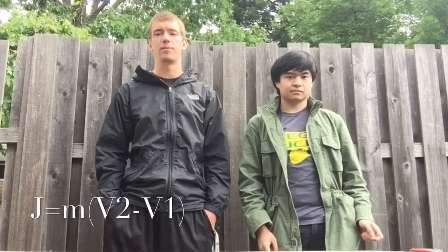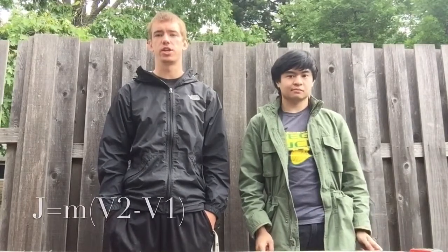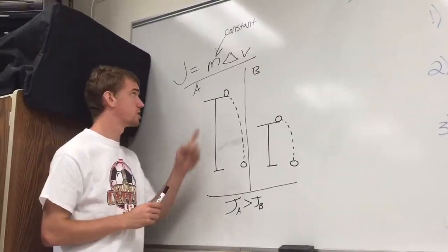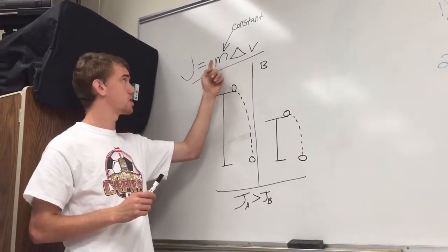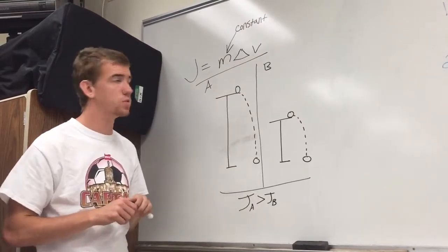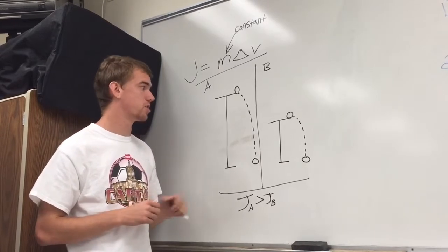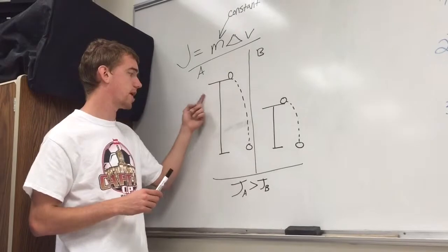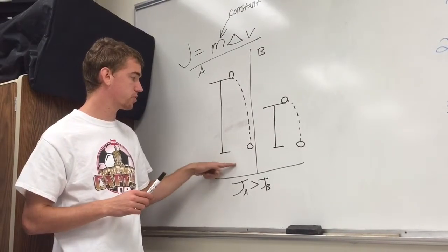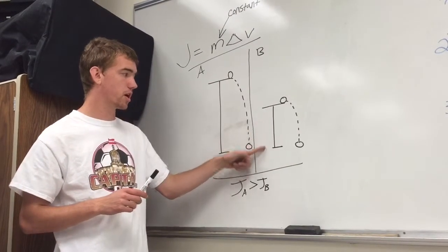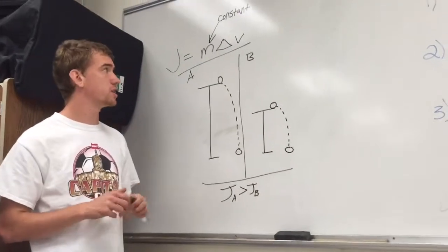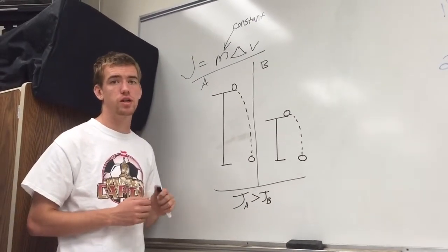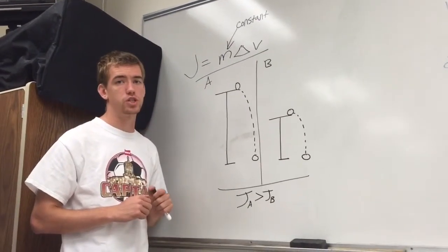We'll be measuring the impulse force and the equation is J equals M delta V, where M equals the mass and delta V equals the change in velocity. So impulse equals the mass times the change in velocity. The velocity changes based on the height at which we drop the egg. If we drop it from a higher height, it experiences a greater impulse force at the bottom, because the egg has more time to accelerate before it reaches the ground.